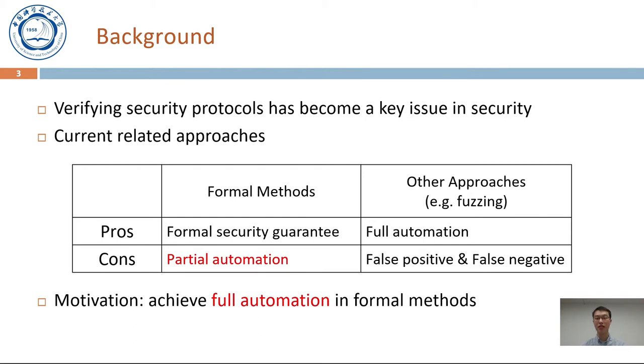There are several approaches in protocol verification, such as formal methods and fuzzing. Compared with other approaches, formal methods can provide formal security guarantee, but can only achieve partial automation.